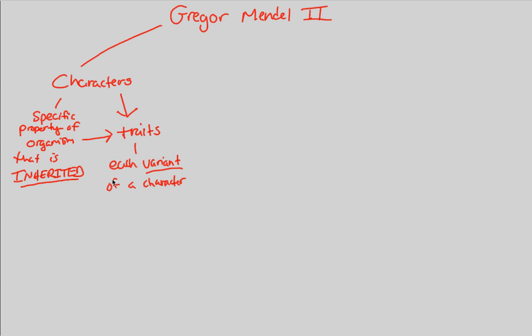But going back to this idea of trait, a trait is simply a character, but a variation of that character. I think a good way to understand this is to simply give you some examples. Same examples that Mendel saw. So if I write out a character here, I'm going to talk about the specific trait. The character is what is inherited.